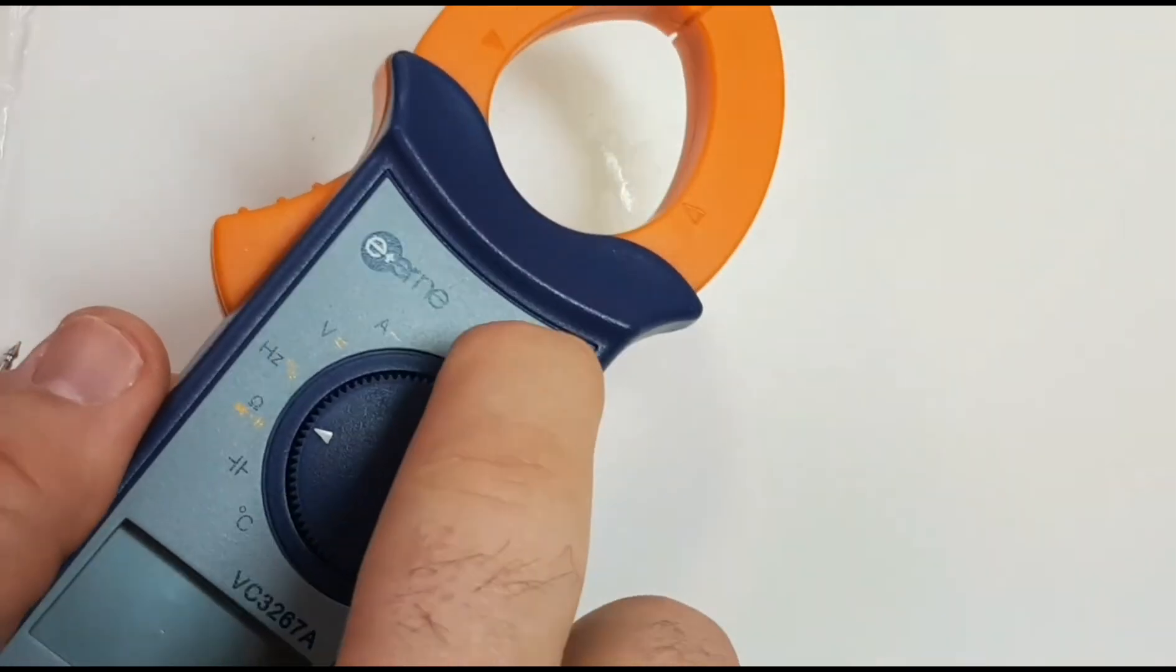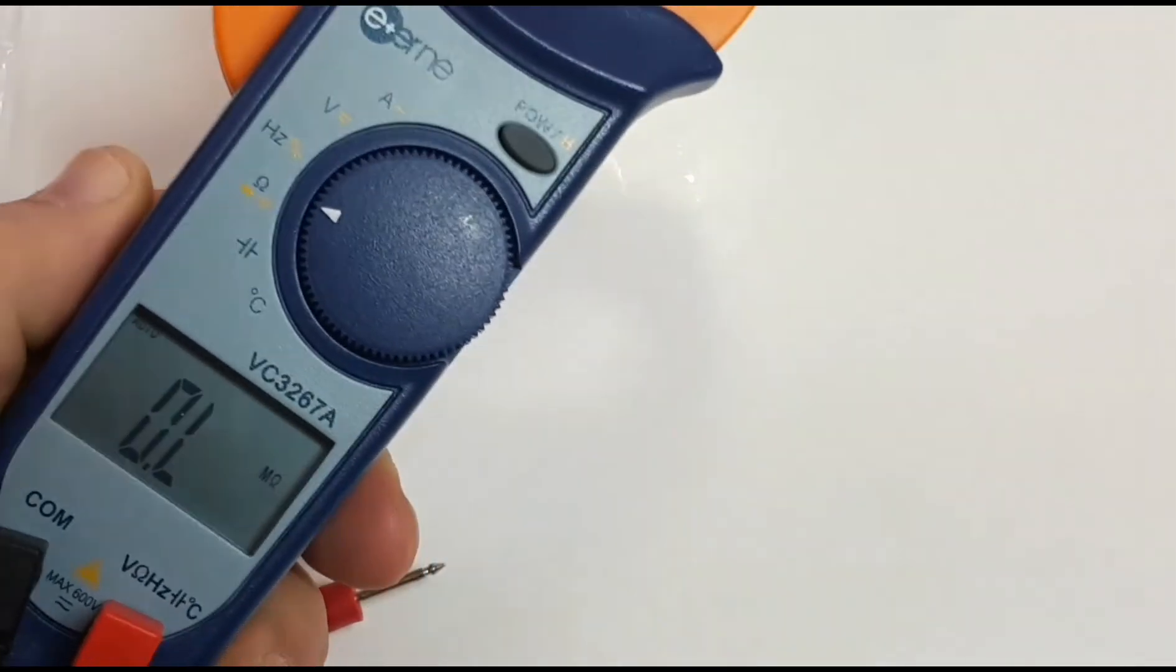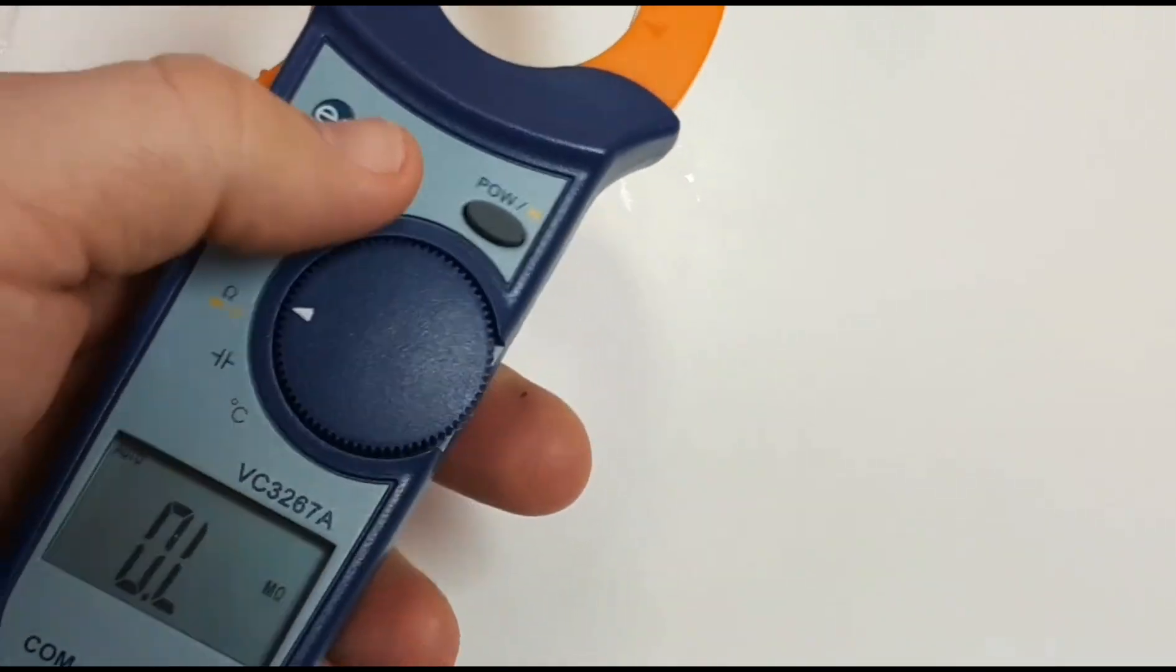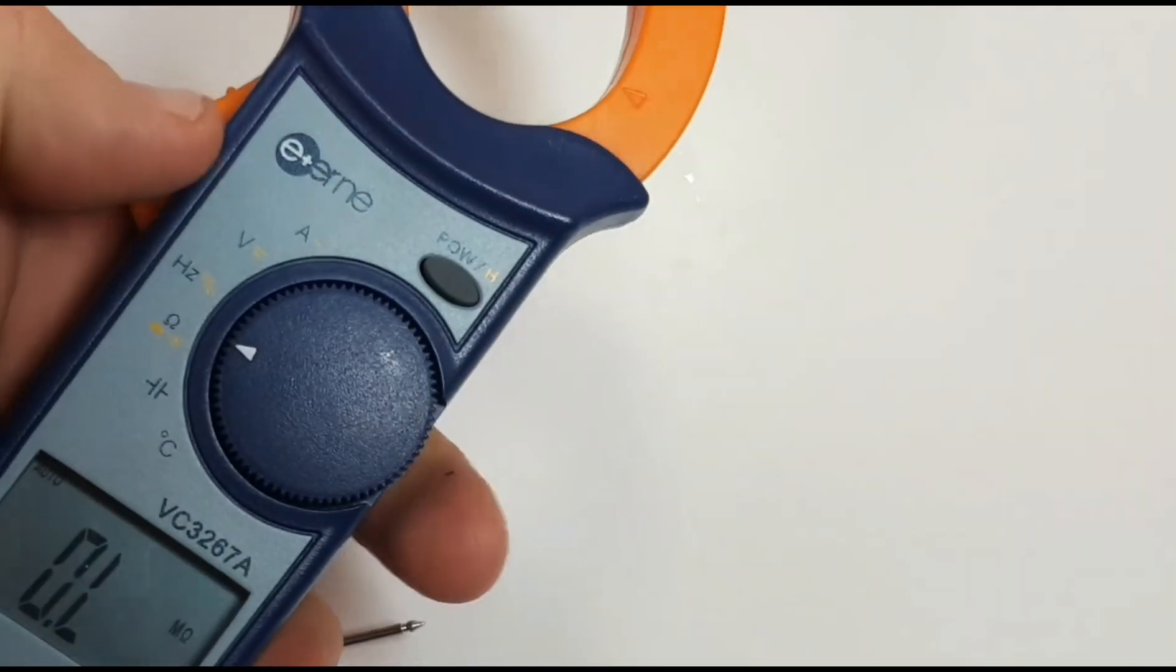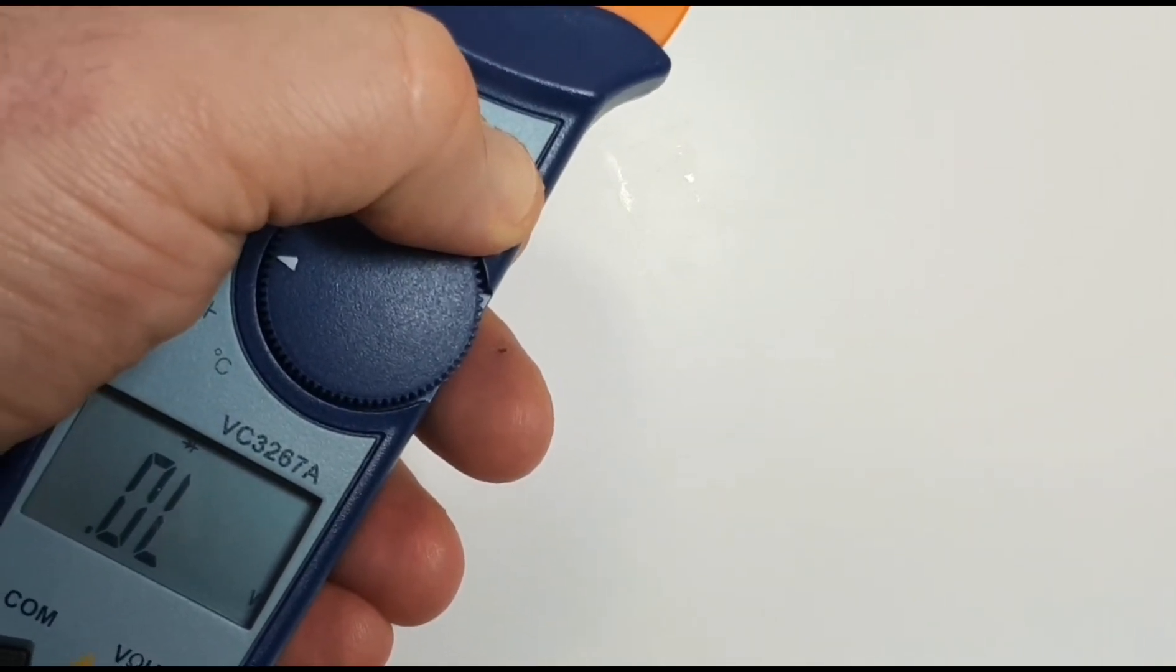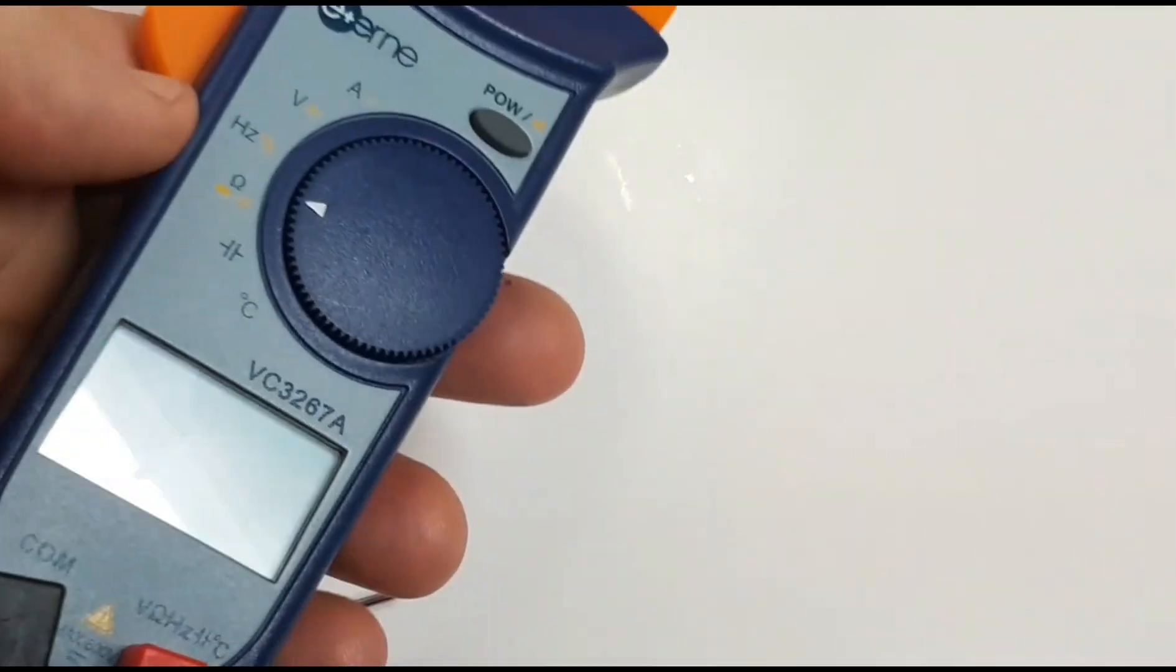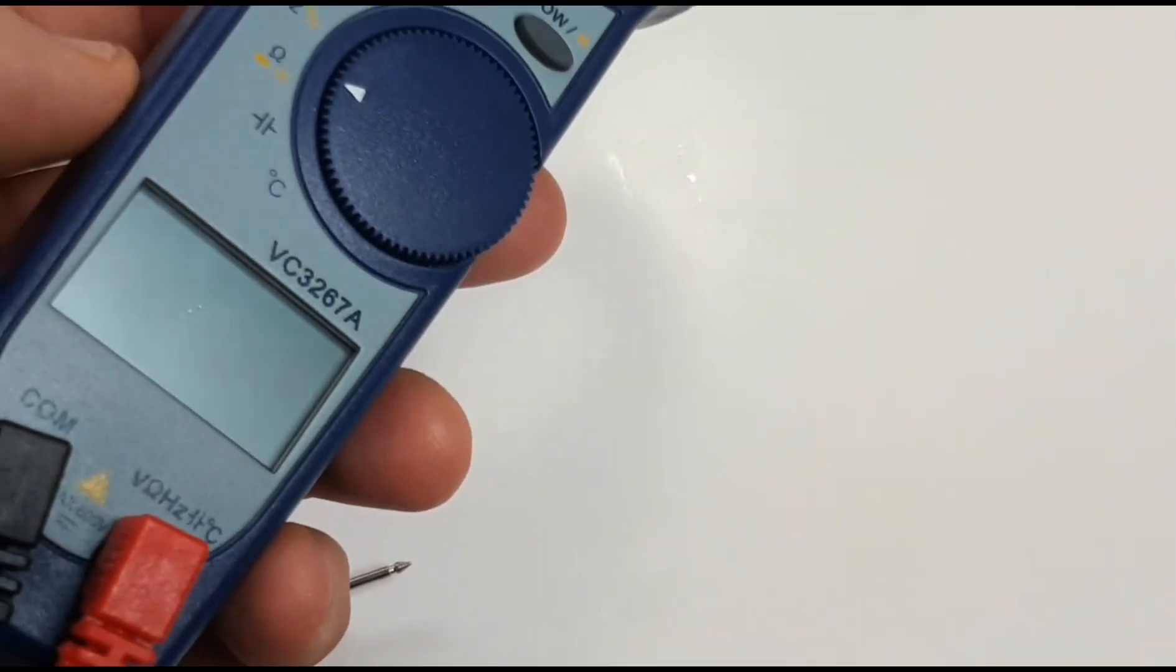To turn this meter on, you simply hold down on the power button and instantly you have your LCD display at the bottom. Now to turn it off it's a little different. There is no off switch per se. Simply hold down on the power button again.